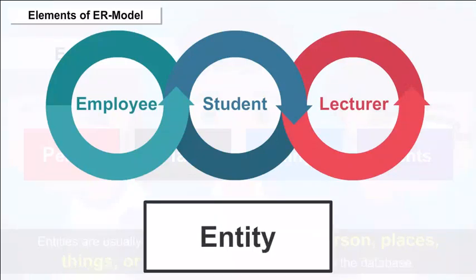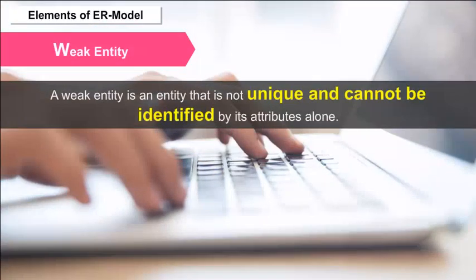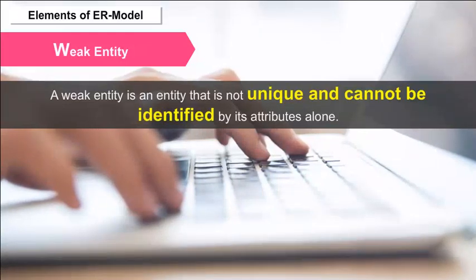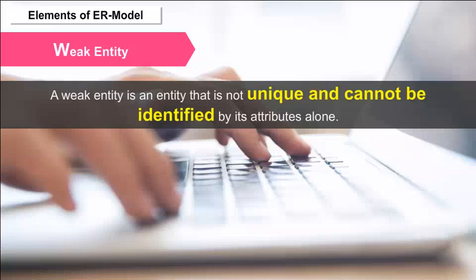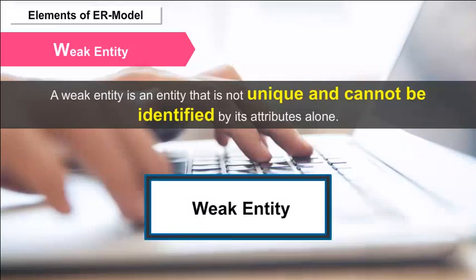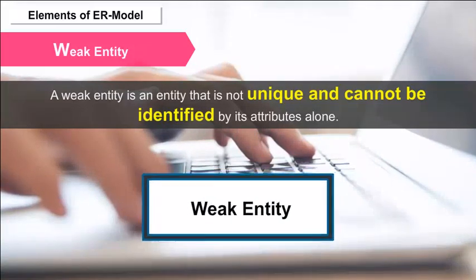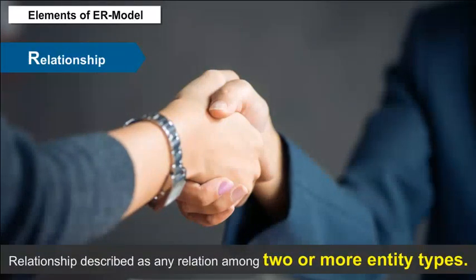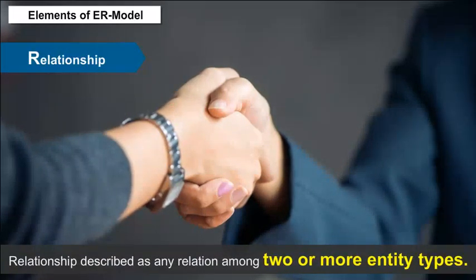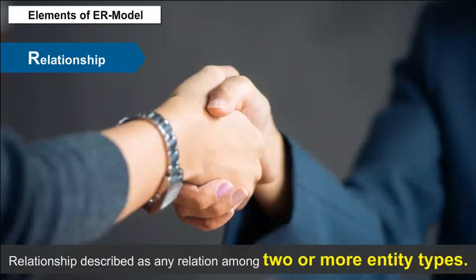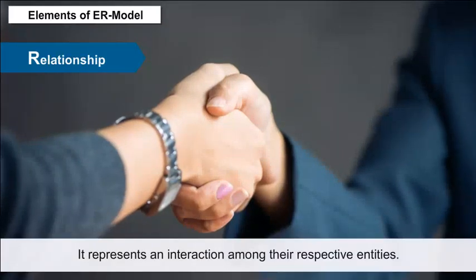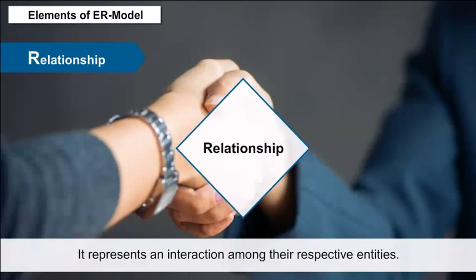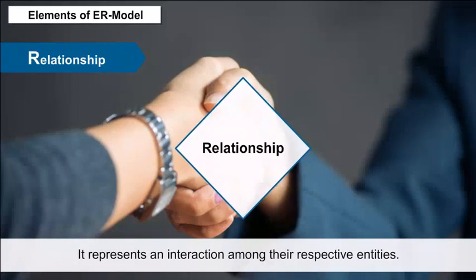Weak Entity — a weak entity is an entity that is not unique and cannot be identified by its attributes alone. It is represented with a double-lined rectangular box. Relationship — a relationship describes any relationship among two or more entity types. It represents an interaction among their respective entities and is represented as a diamond box.